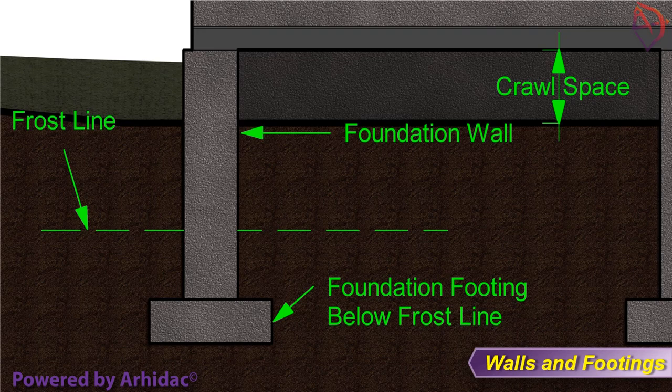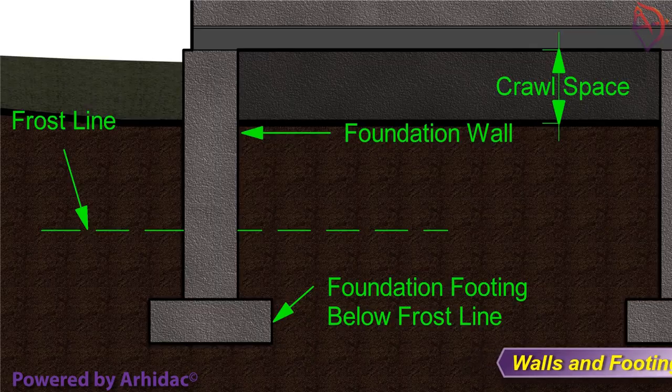Most foundation designs consist of walls and footings. Footings rest directly on the soil and act as a base for foundation walls. In most foundation designs, footings serve to distribute the weight of the building over a wider soil area. Concrete piers and steel columns or wood posts are frequently used to support interior sections of a building.